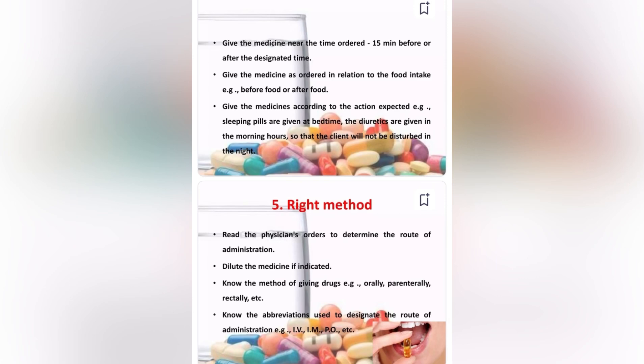Right method: Read the physician's order to determine the route of administration. Dilute the medication if indicated. Know the method of giving drugs, such as oral, parenteral, rectal, etc. Know the abbreviations used to designate the route of administration, including IV, IM, and PO.